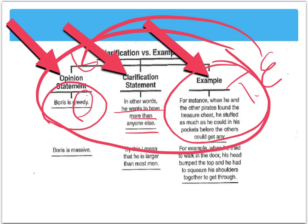A second example would be Boris is massive. By this, I mean that he is larger than most men. And that flows with it. It's just making what you're saying clear. For example, when he tried to walk in the door, his head bumped the top and he had to squeeze his shoulders to get through. So you're giving an example and proving that Boris is massive.